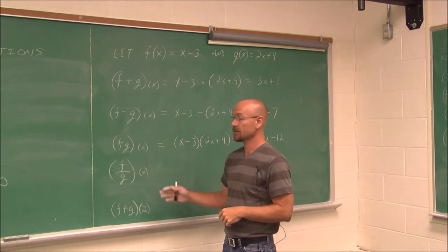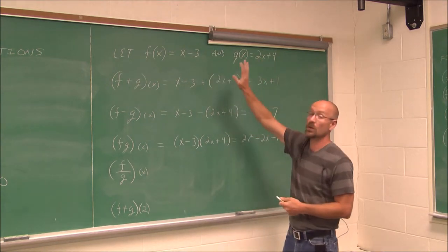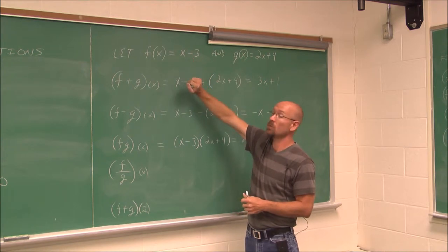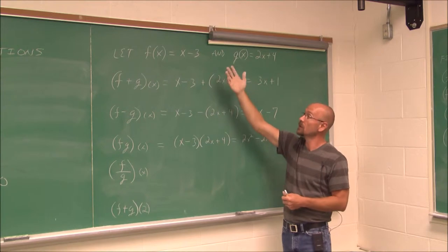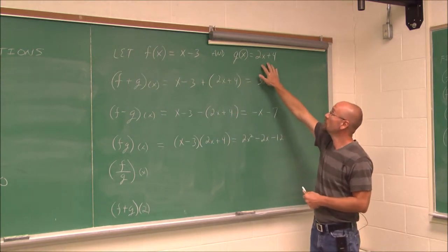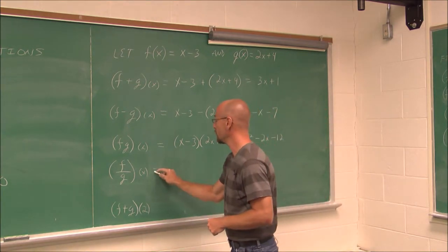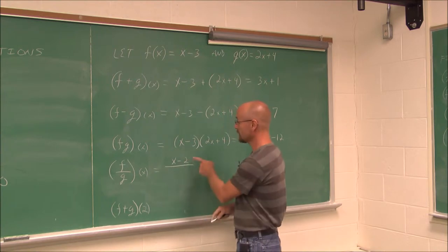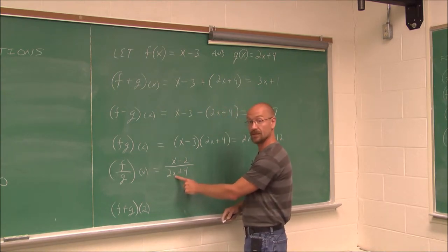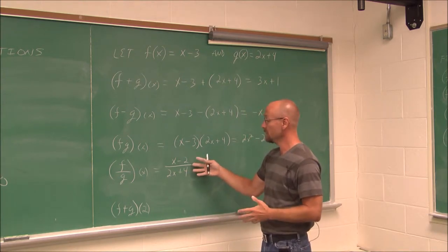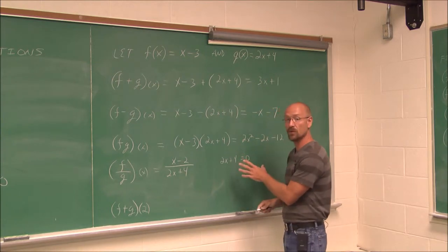Here we have f divided by g of x. This one may introduce more domain restrictions. Let's look at what our current domains are. x minus 3 is a linear equation — no domain restrictions, no square roots, no division by x. g of x is also a linear function, so no domain restrictions. But since we're going to do division, I take f of x divided by g of x. Now there's a domain restriction because there is an x in the denominator, so I set g of x equal to zero and solve: subtracting 4 and dividing by 2 gives x equals negative 2. That is our domain restriction.